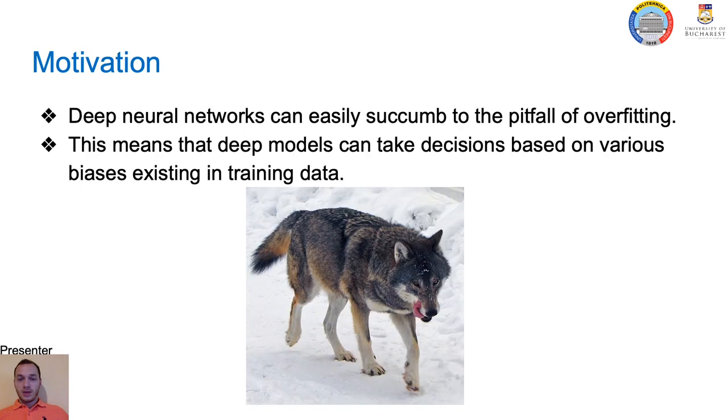While deep neural networks attain state-of-the-art results in various domains, such models can easily succumb to the pitfall of overfitting. This means that deep models can make decisions based on various biases existing in the training data. Such a notorious example is an image with a wolf being correctly labeled but only because of the snowy background. To overcome this issue, several data augmentation approaches have been proposed by researchers. Nevertheless, not all augmentation methods lead to better results.